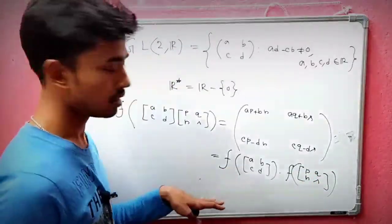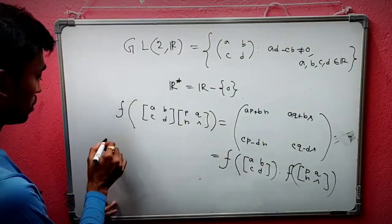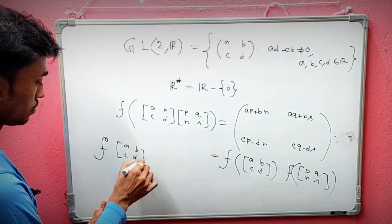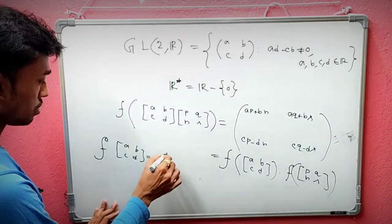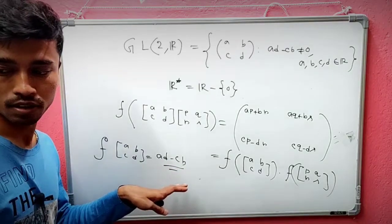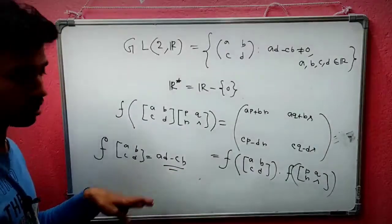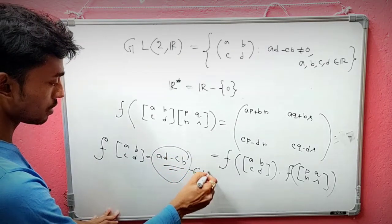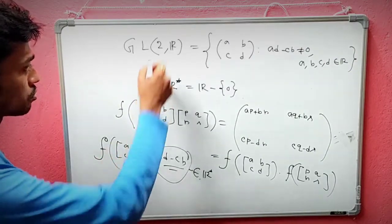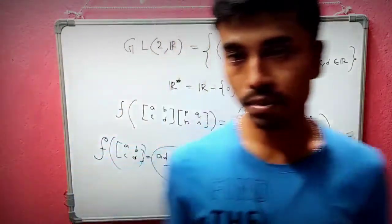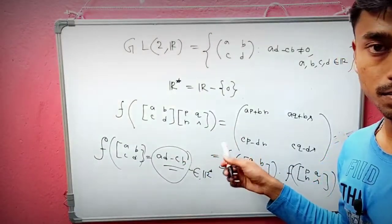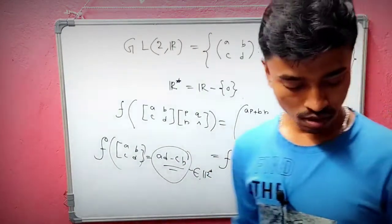The mapping is defined as follows: the matrix [a b; c d] maps to ad minus cb, which is its determinant. This element belongs to R*, and the matrix belongs to GL(2,R). That is how we define this group homomorphism — and we can verify that it satisfies the homomorphism property.